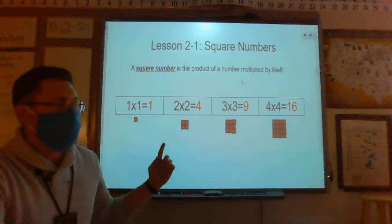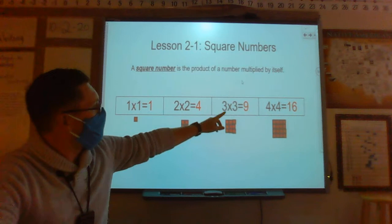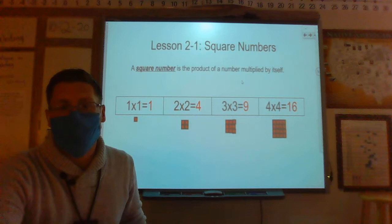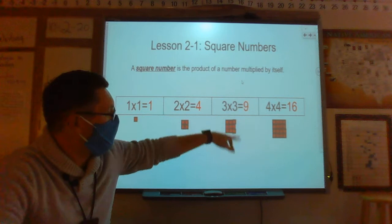1 times 1 is 1, 2 times 2 is 4, 3 times 3 is 9, 4 times 4 is 16. 1, 4, 9 and 16 are all squared numbers because their factors are multiplied by themselves.